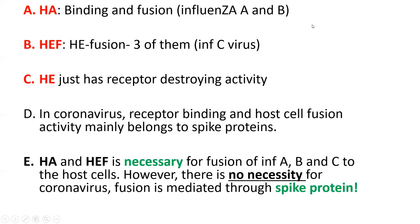HE in coronavirus doesn't mainly perform binding and fusion functions — it's very different here. In coronavirus, receptor binding and host cell fusion activity mainly belongs to the spike proteins, so spike proteins are very important for coronaviruses, and hemagglutinin esterase is not as critical. HA and HEF are necessary for fusion of influenza A, B, and C to host cells — these viruses can't fuse if those enzymes are absent. But this is not valid for coronaviruses: even without hemagglutinin esterase, coronaviruses can still bind to host cells because fusion is mediated through spike protein.